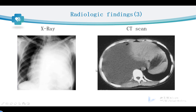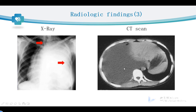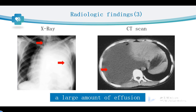What can we find from these two pictures? In the x-ray, we can find the left thorax is filled with a large amount of effusion. The CT scan shows another patient with a large amount of pleural effusion in the right thorax. Those are large amounts of effusion.